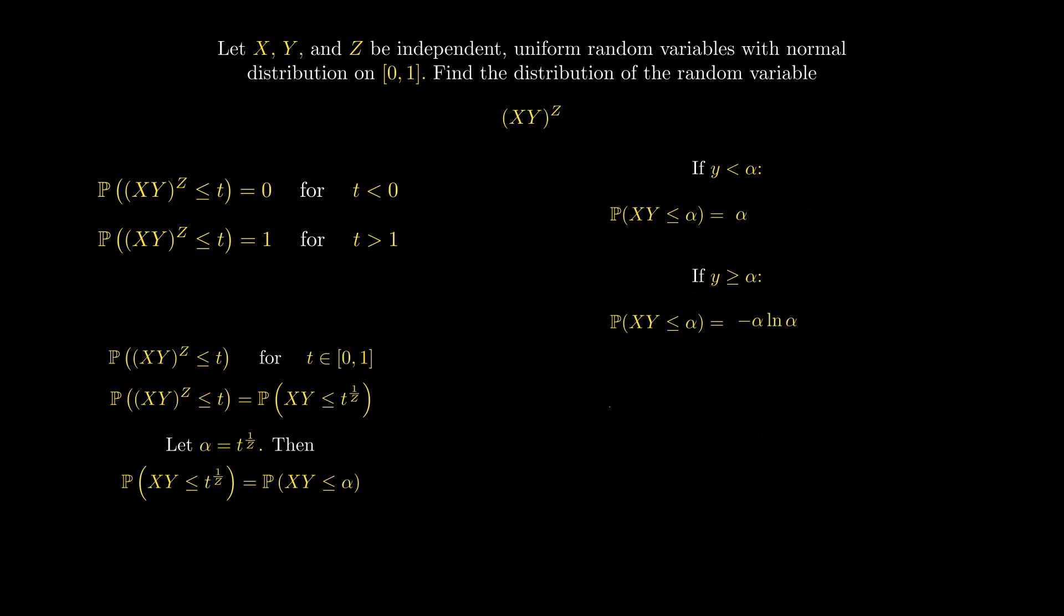Adding the two probabilities together, we get that the probability that XY is less than alpha is alpha minus alpha times the natural log of alpha. Plugging in t^(1/z) for alpha, we get that the probability that XY is less than or equal to t^(1/z) is t^(1/z) minus t^(1/z) times the natural log of t^(1/z).